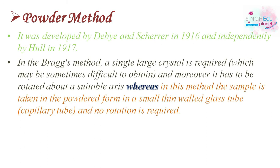In Bragg's method, we see that a single large crystal is required, which is difficult to obtain. Another requirement is that we need to rotate it on a suitable axis. But what happens in the powder method? We don't need any such rotation.